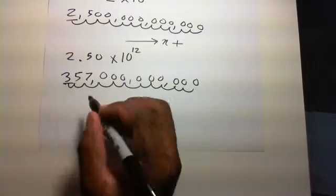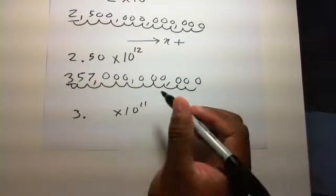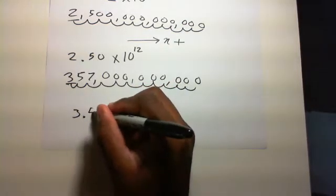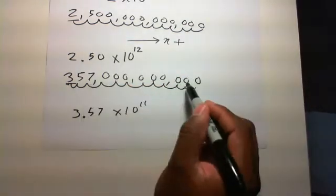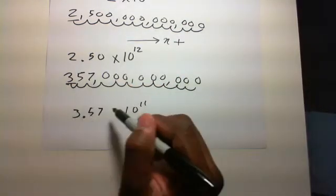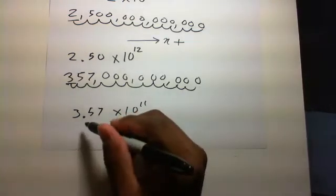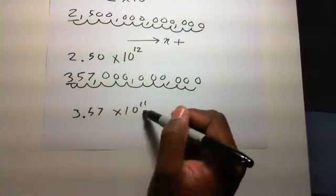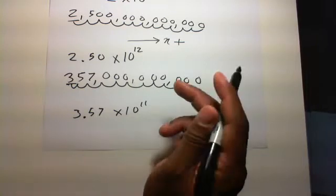You moved it to the left of the decimal point so it's there. And these two numbers follow. So this number in scientific notation is this: 3.57 times 10 to the 11th power.